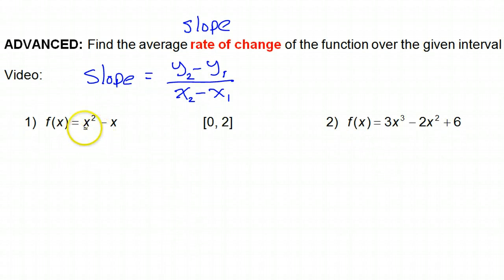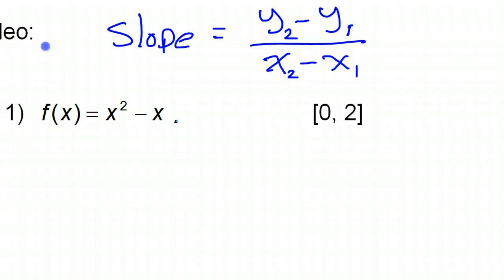So when they say find the rate of change of some function over an interval, let me zoom in. So this is the interval that they're talking about. And the interval, these are x values. Okay, so they're saying, from this x value to this x value. They're giving you two x values.